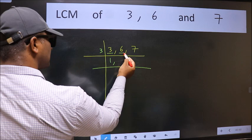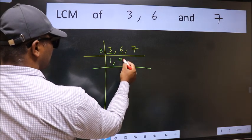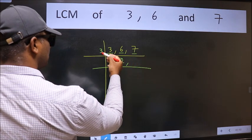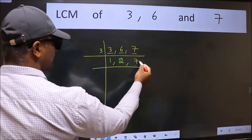The other number 6. When do we get 6 in the 3 table? 3 times 2 is 6. The other number 7 is not divisible by 3, so we write it down as it is.